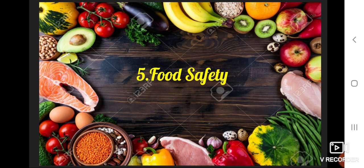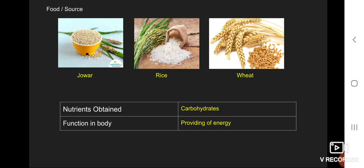Let us study a chart of food sources, nutrients obtained, and their function in the body. The first food source is javar, rice, and wheat. The nutrients obtained are carbohydrates, and the function in the body is providing energy.